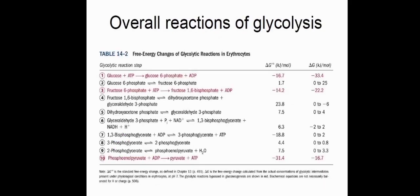The overall reactions of glycolysis show the free energy change — delta G — calculated from the actual concentration of glycolytic intermediates. That concludes today's class. If you have any queries or questions, please write them in the comment section. Thank you all.